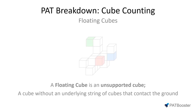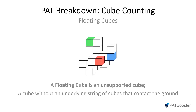Let's look at a new figure. I have three cubes color-coded here and you should be able to tell that they are all of the floating variety. The red cube is pretty easy — you can tell that it's unsupported and it only has one of its faces touching another cube, so five of its faces will be painted.